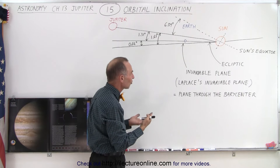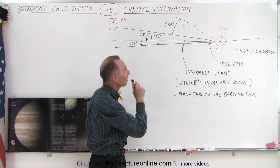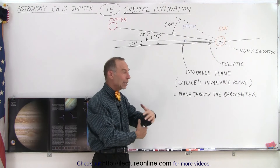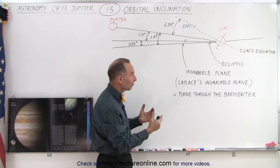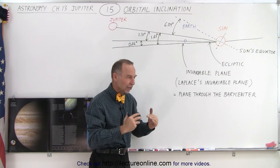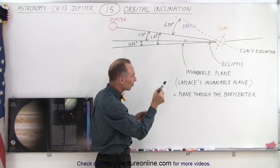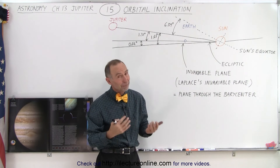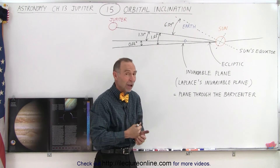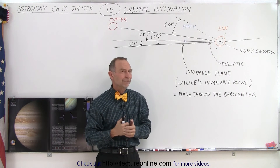So we typically use the ecliptic plane as a reference point, but we also use the invariable plane and sometimes the Sun's equatorial plane. The reason we want to use all of those is because we try to understand the orbital motion of all the planets, including Jupiter, relative to the formation of the solar system and the motion of the Sun as well as all the other planets. There does seem to be some discrepancy between the orbital motion of the Sun and the direction of the axis about which it rotates versus the orbital motion of the planets, and we need to explain those — that's why we want to reference the various planes.